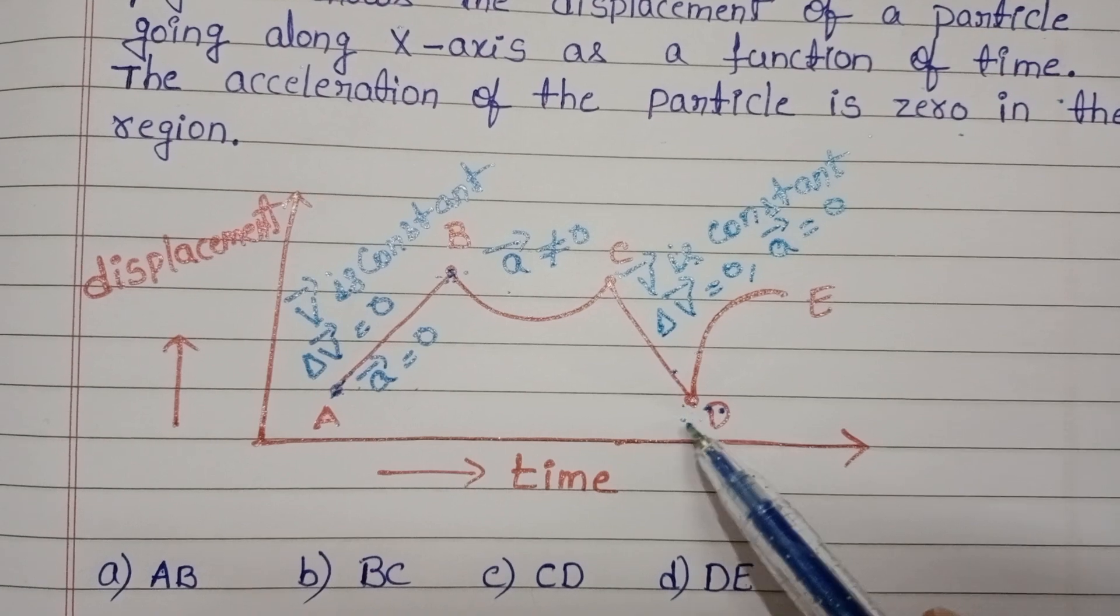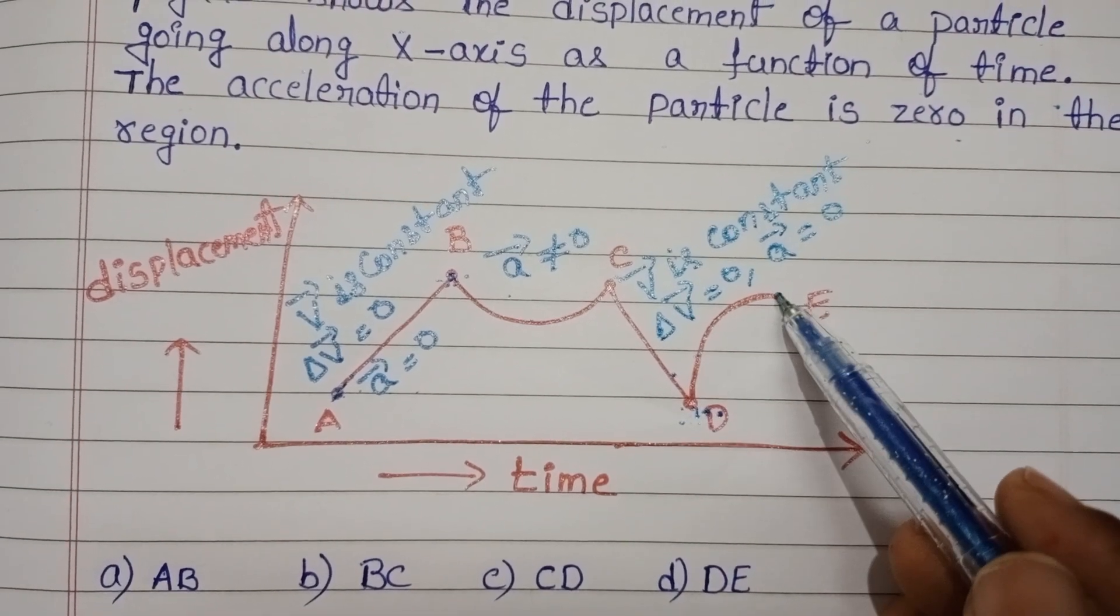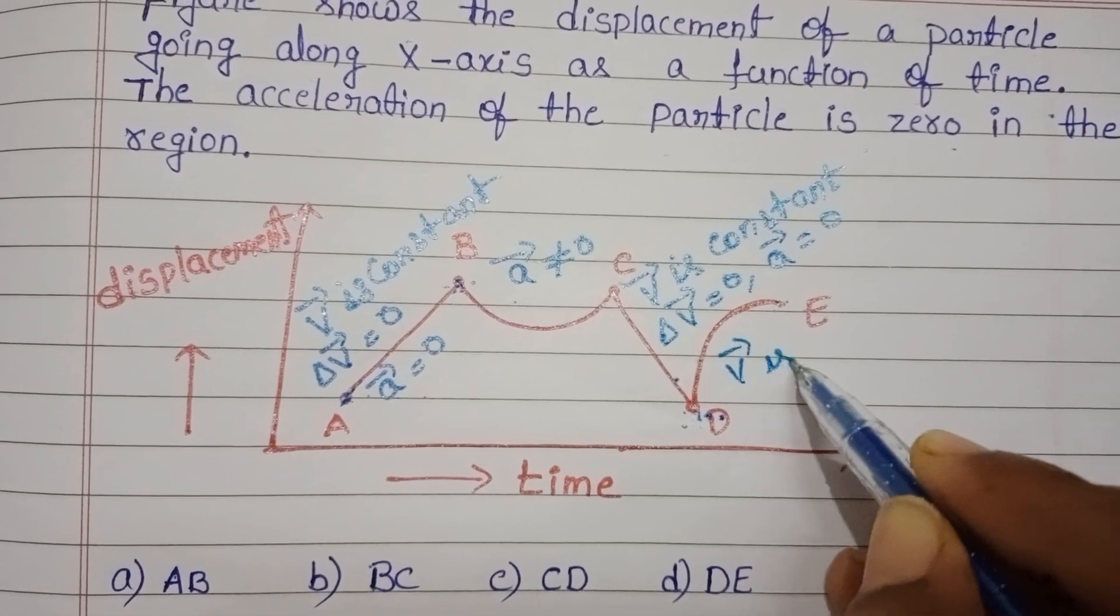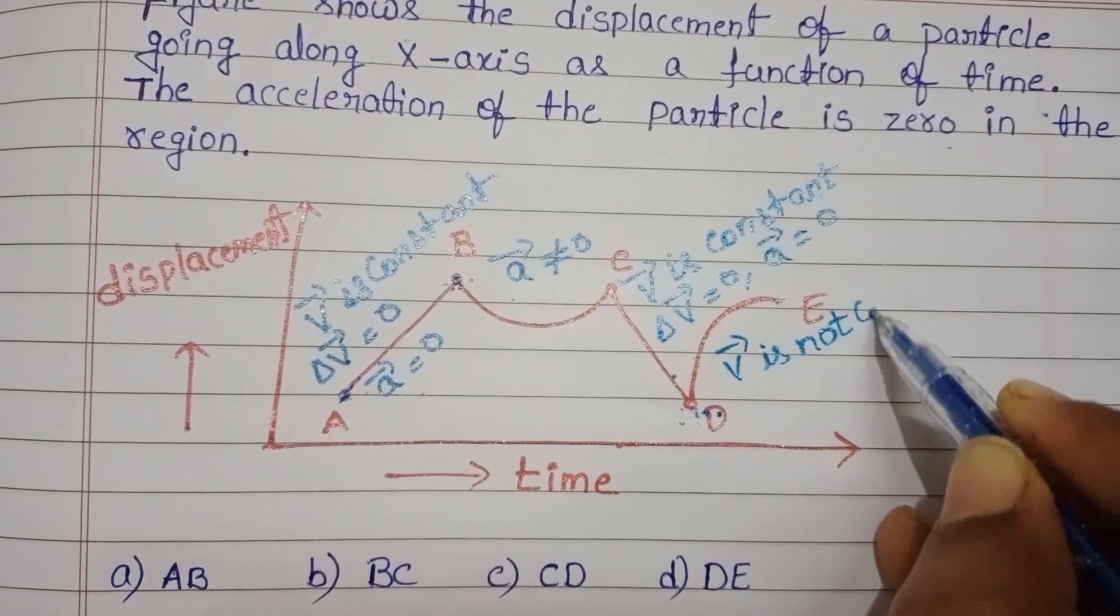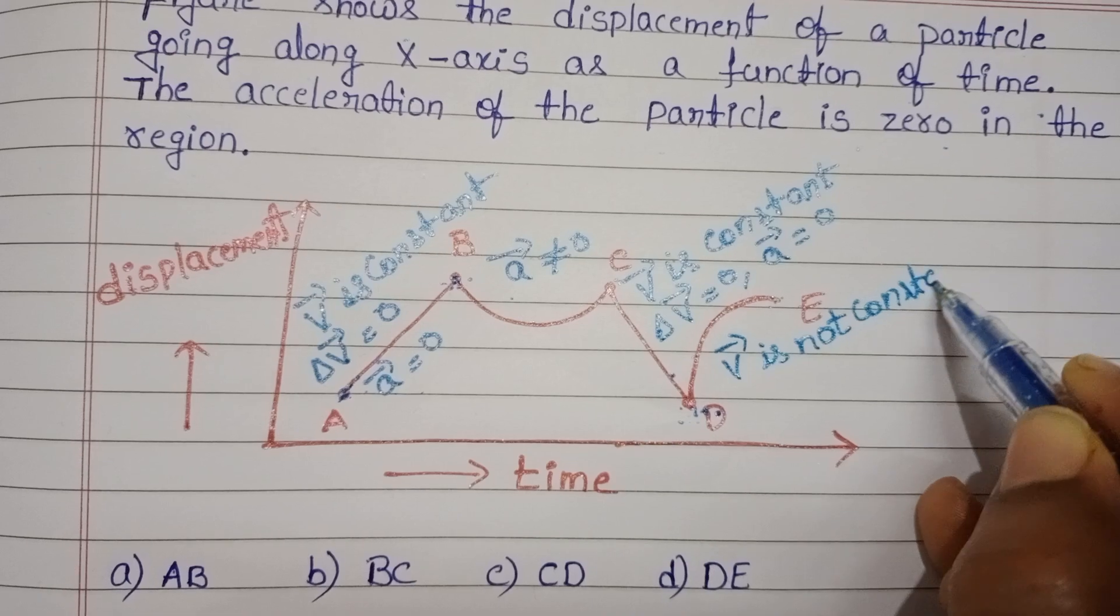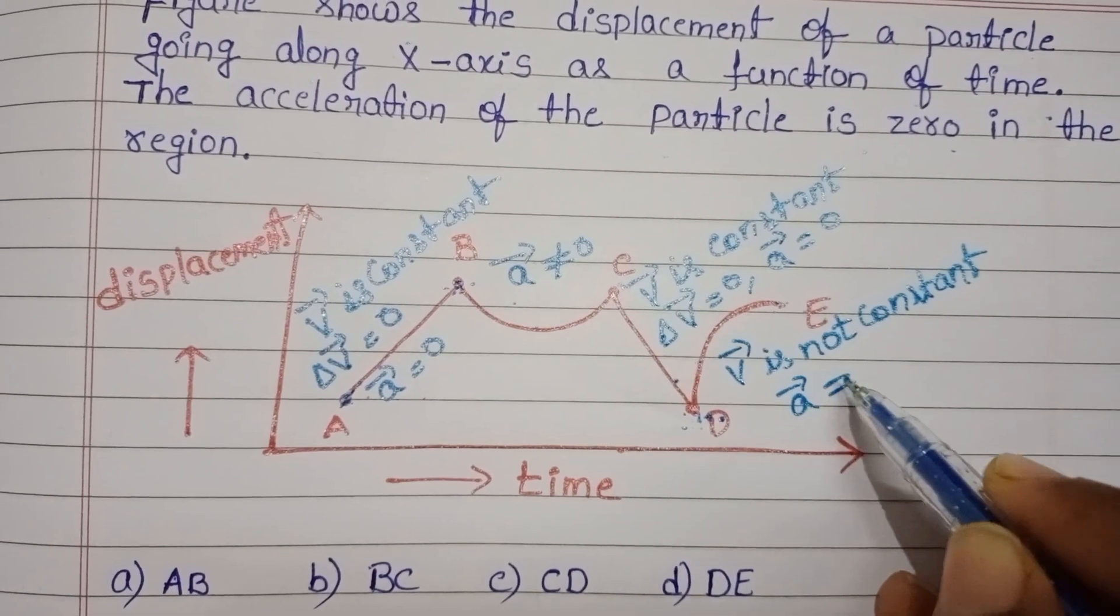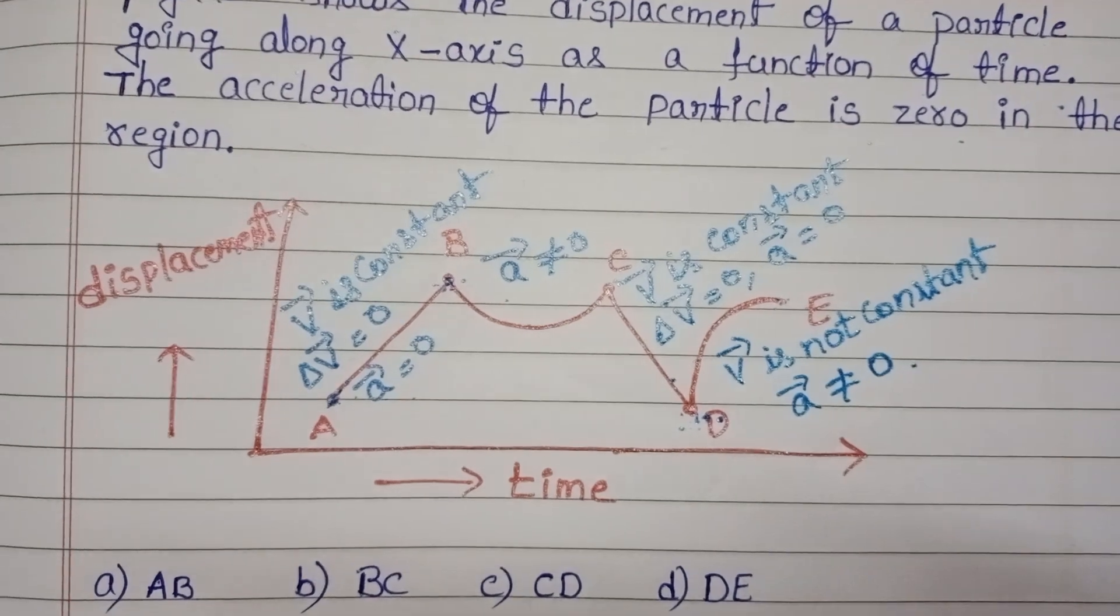And D to E region is a curve, non-uniform motion. Then velocity is not constant. When velocity is not constant, then acceleration is also not equal to zero.